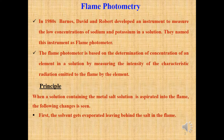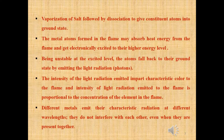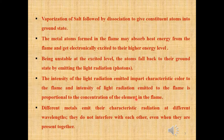When a solution containing a metal salt solution is aspirated into the flame, the following changes are seen. First, the solvent gets evaporated, leaving behind the salt in the flame. Next, vaporization of the salt takes place, followed by dissociation to give the constituent atoms into the ground state. The metal atoms formed in the flame may absorb the heat energy from the flame and may get electronically excited to the higher energy level. Being unstable at the excited level, the atoms fall back to their ground state by emitting light radiation. The intensity of light radiation emitted imparts a characteristic color to the flame, and the intensity of light radiation emitted is proportional to the concentration of the element present in the flame.